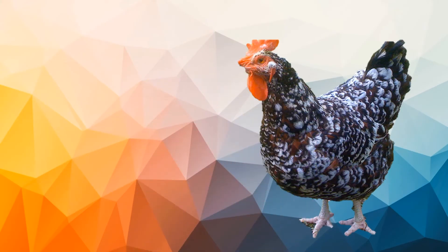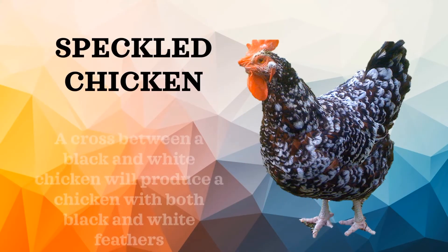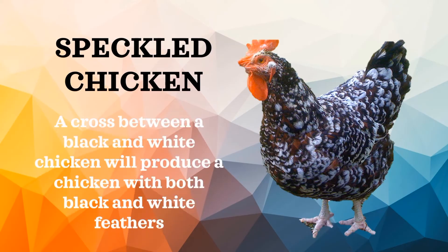A speckled chicken is a good example of co-dominance. A cross between a black and white chicken will produce a chicken with both black and white feathers. The allele for black feathers in some varieties of chicken is co-dominant with the allele for white feathers.